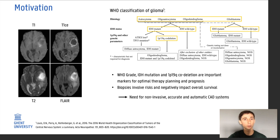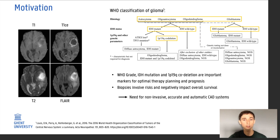In the most recent WHO classification guidelines of Glioma, there are three markers that play a central role: WHO Grade — High Grade 4 Glioblastoma versus Lower Grade Glioma — IDH Mutation Status, and for Lower Grade Glioma, 1P19Q Co-Deletion. These markers are important for optimal therapy planning and prognosis.